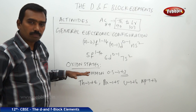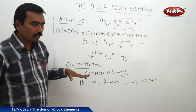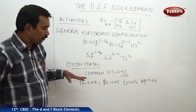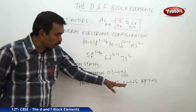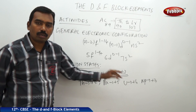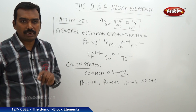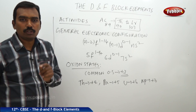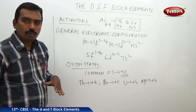Most actinides are radioactive. The elements that come after uranium are called transuranic elements, and these are found to be radioactive in nature.